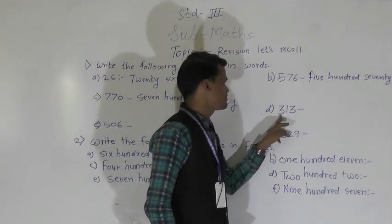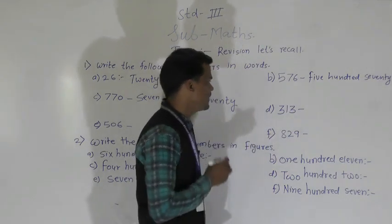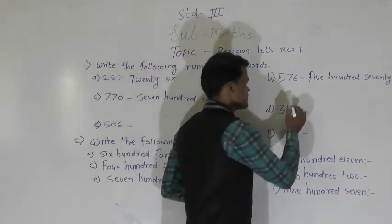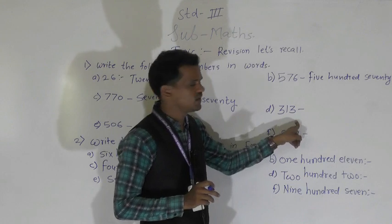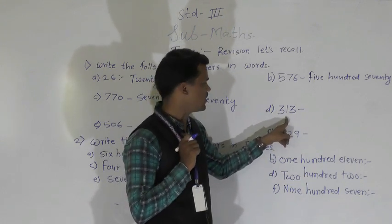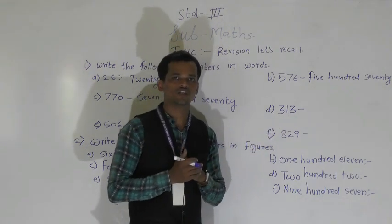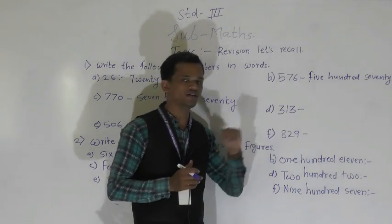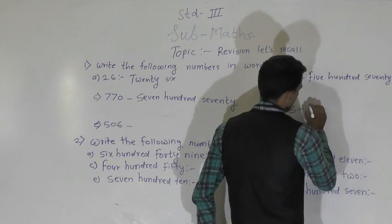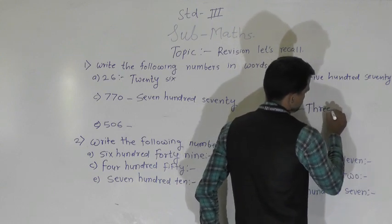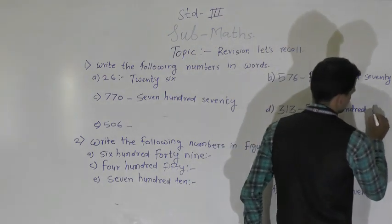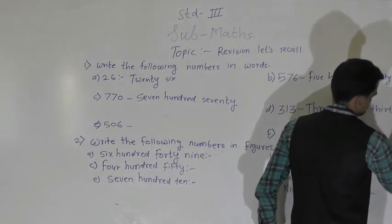Next number: 313. See the places of the digit. At the ones place 3 means 3, 1 comes at the tens place so 10, and 3 comes at the hundreds place. So this number is 313. Write the spelling of this number: 313.